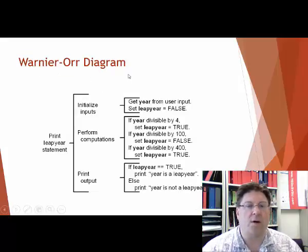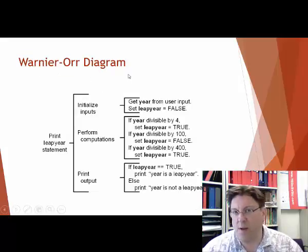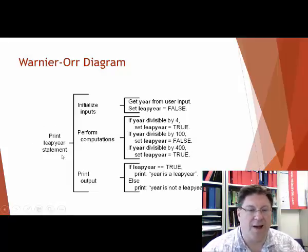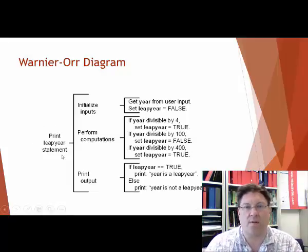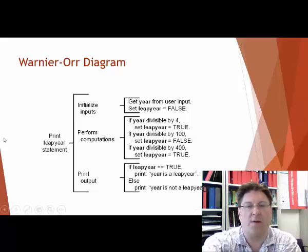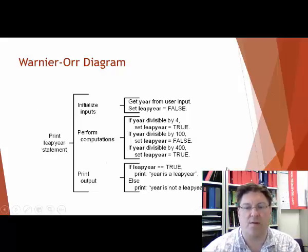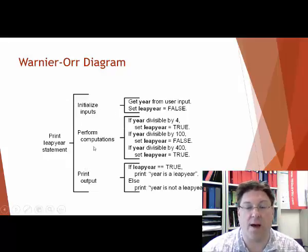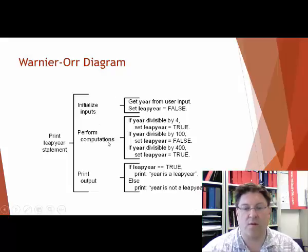Whereas, Warnier-Orr diagrams are designed for maybe business people or people who are just brainstorming a problem. Like, you start off with a problem and say, I want to print whether or not something's a leap year. But, I don't know all the details. These details off to the right, I don't know about those. Well, what am I going to have to do? It's going to have to have input, processing, and output. I know that. So, what are going to be my inputs? What are going to be the process steps? And what's going to be the output? And you can kind of get a high-level look at the problem.